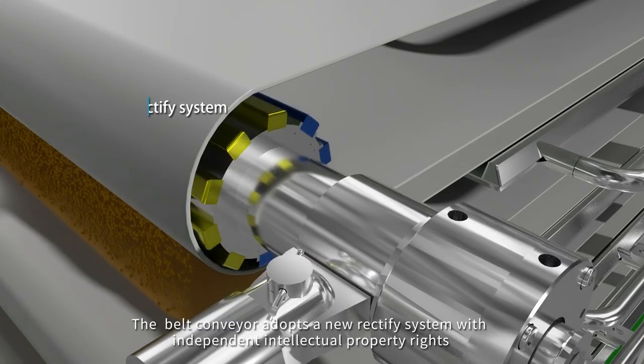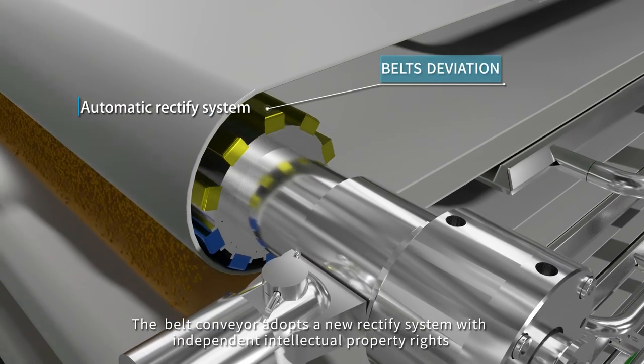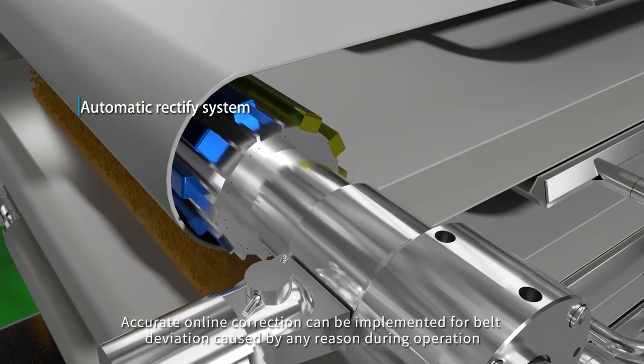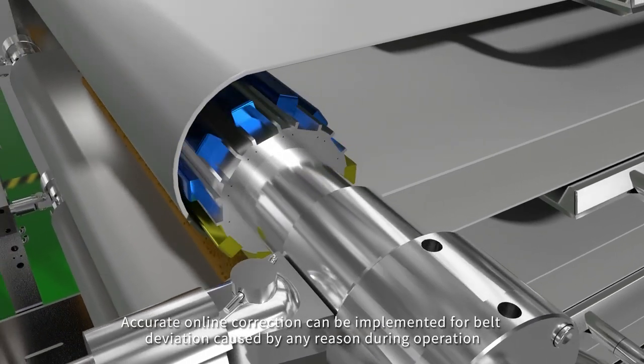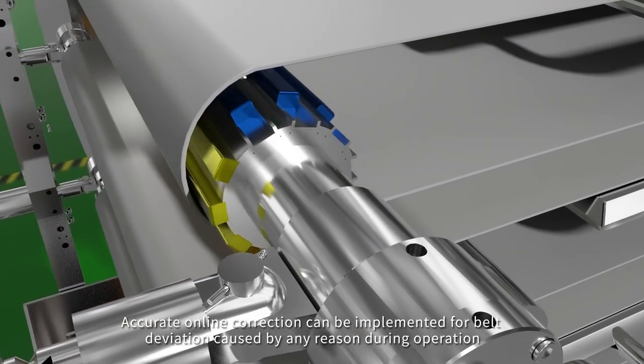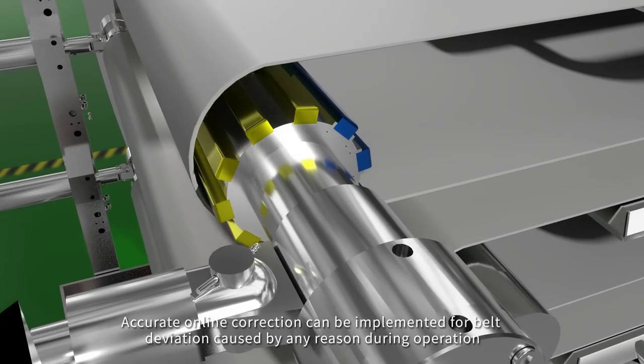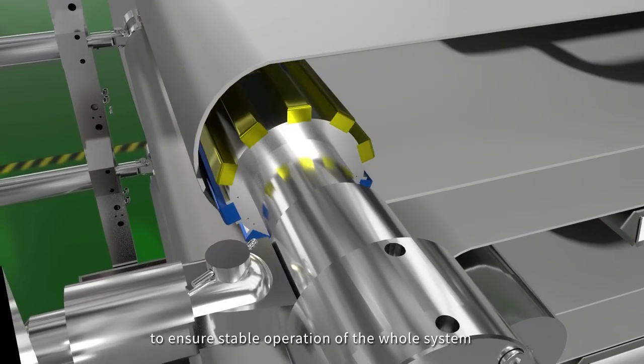The belt conveyor adopts a new rectified system with independent intellectual property rights. Accurate online correction can be implemented for belt deviation caused by any reason during operation to ensure stable operation of the whole system.